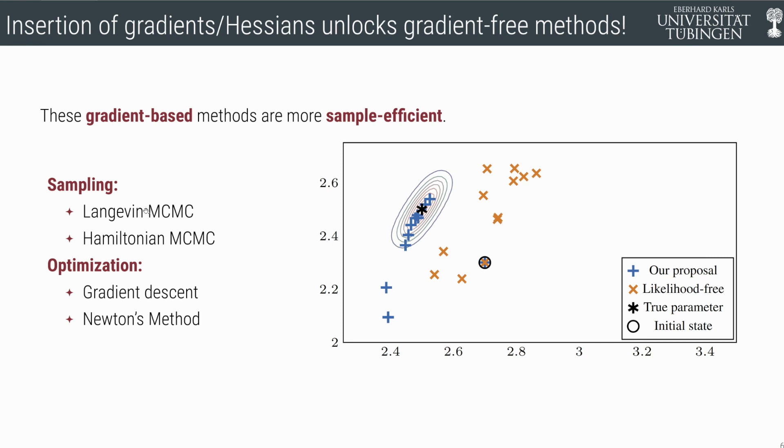In this plot, you see a comparison of likelihood-free sampling versus gradient-based sampling. That's Hamiltonian Monte Carlo for gradient-based sampling, and Random Walk Metropolis Hastings for likelihood-free. You see that the blue dots move way faster to the mode than the orange ones. Our proposal is a lot better than the likelihood-free ones.